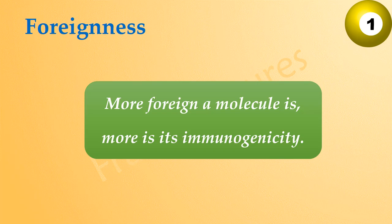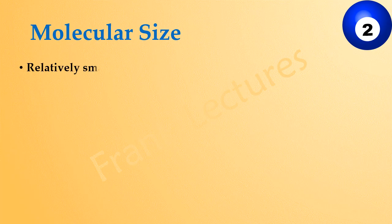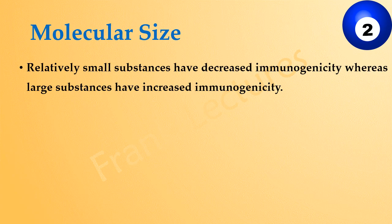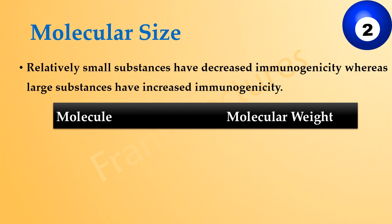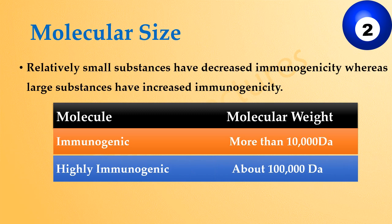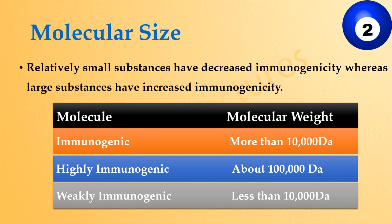The second property which determines the immunogenicity of a substance is its molecular size. It has been found that relatively small substances have decreased immunogenicity, whereas large substances have increased immunogenicity. The most potent immunogens are molecules with a molecular weight above 10,000 daltons. Highly immunogenic molecules have a molecular weight of one lakh daltons or more. Molecules with a weight less than 10,000 daltons are weakly immunogenic or not immunogenic at all. So the greater the molecular weight, the more immunogenic it is.